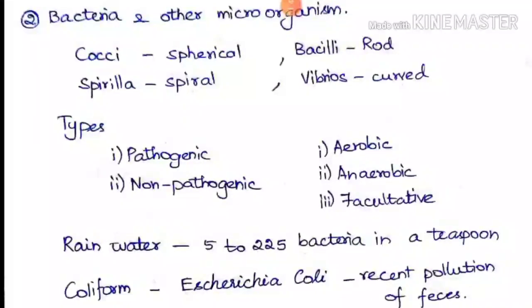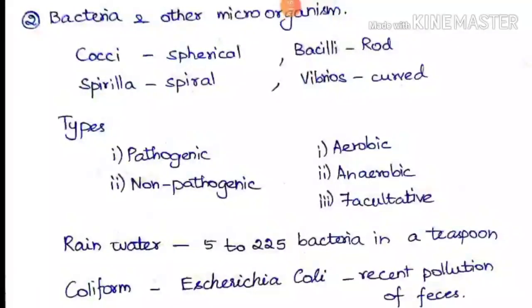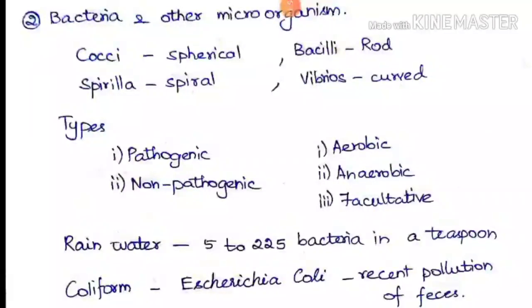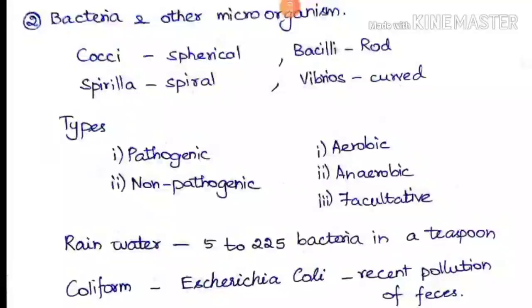There are various types - pathogenic and non-pathogenic. Pathogenic means harmful to humans, non-pathogenic means not harmful. The next types are aerobic, anaerobic, and facultative. Aerobic lives in the presence of oxygen, anaerobic can survive without oxygen, and facultative can survive in both conditions.